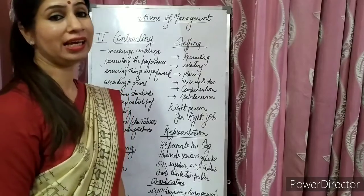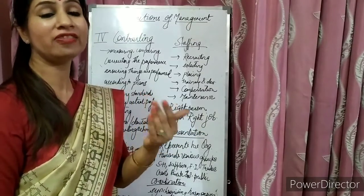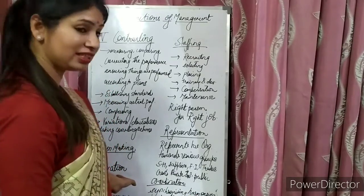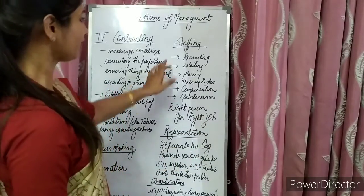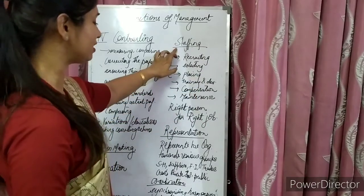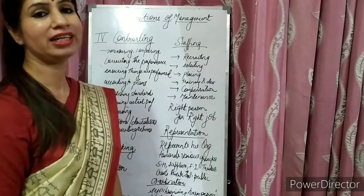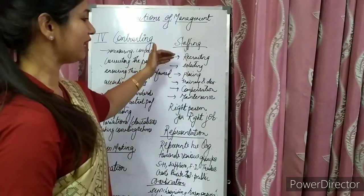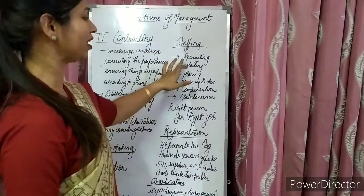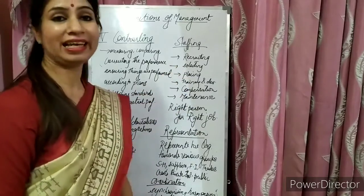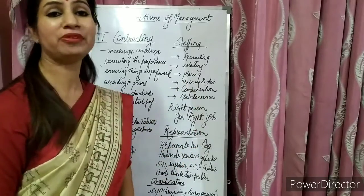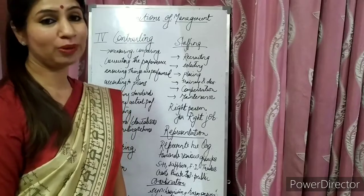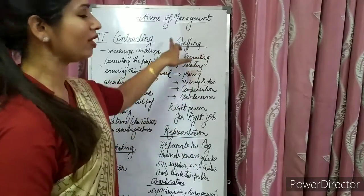Next is innovation — creating, researching, developing new ideas, new products, and new policies. The manager as an innovator has to do creativity in his management. Next is staffing: the appointment of the right person for the right job. Staffing includes recruiting employees, selecting them, placing them for the right job, giving training, development, determining compensation, wages, and salaries, and maintaining employees in the organization.